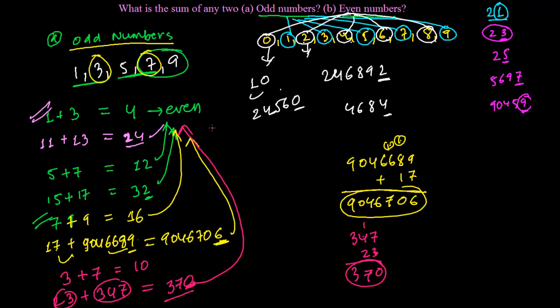So continuously what we are getting is, whenever we are going to add 2 odd numbers, whenever you are adding 2 odd numbers, always and always you will get an even number. So keep this in mind. Adding 2 odd numbers always results in an even number.